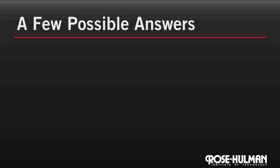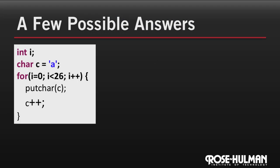So here's one way we might solve the problem. In this solution, we're using an int i to control the loop, and a char c to track the next character to output. Each time through the loop, we print the character using putchar, and we increment the char variable. Now this solution works, but it's a bit inelegant. Why use two loop variables and increment both of them during the loop?